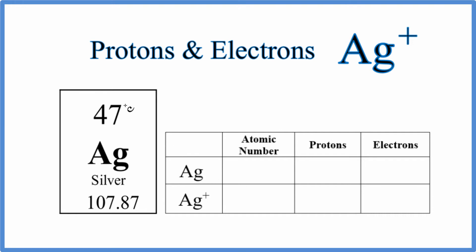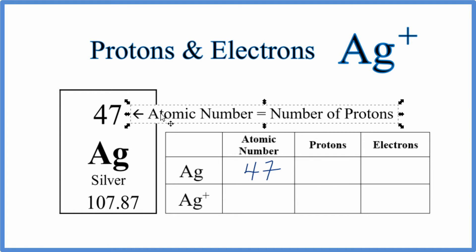For silver, it has an atomic number of 47. So we can put an atomic number of 47 for silver in here. The atomic number equals the number of protons. So Ag will also have 47 protons.